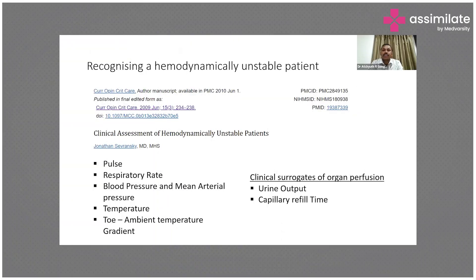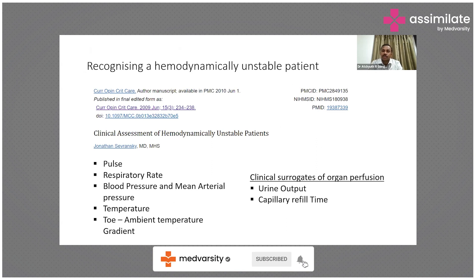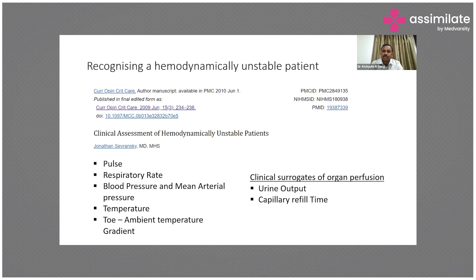How do you recognize a hemodynamically unstable patient? There was a nice article published back in 2009 on clinical assessment of hemodynamically unstable patients. Apart from diagnostic modalities, radiological and lab investigations, clinically, the signs we depend on for assessment of hemodynamics are the basic tests: pulse rate, respiratory rate, blood pressure, mean arterial pressure, and temperature.